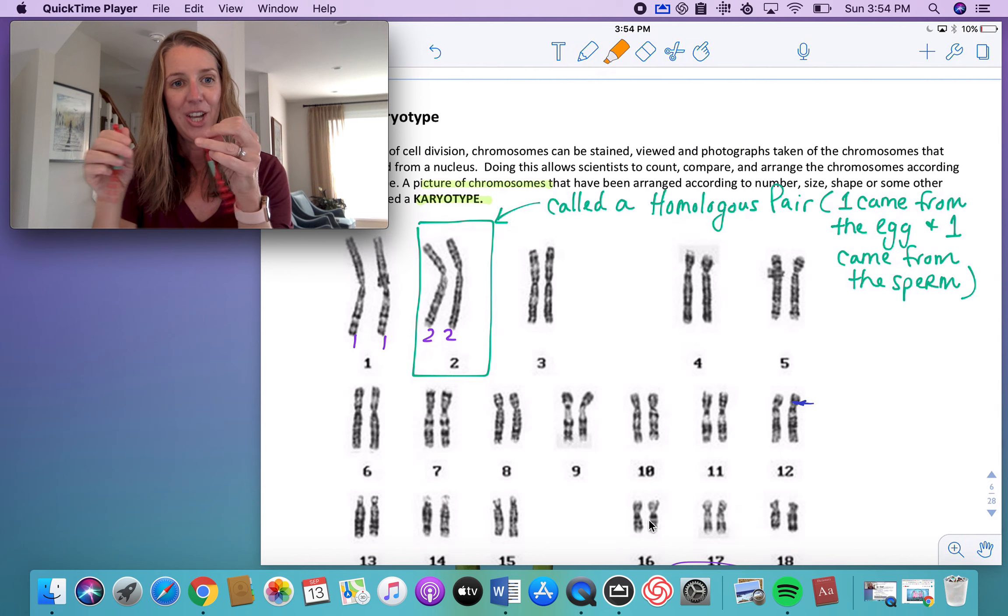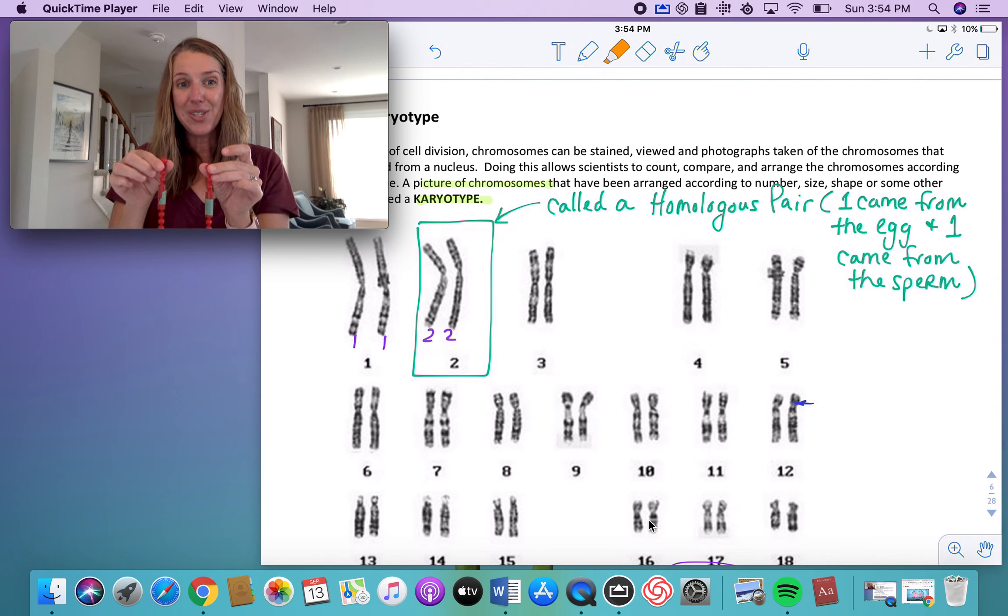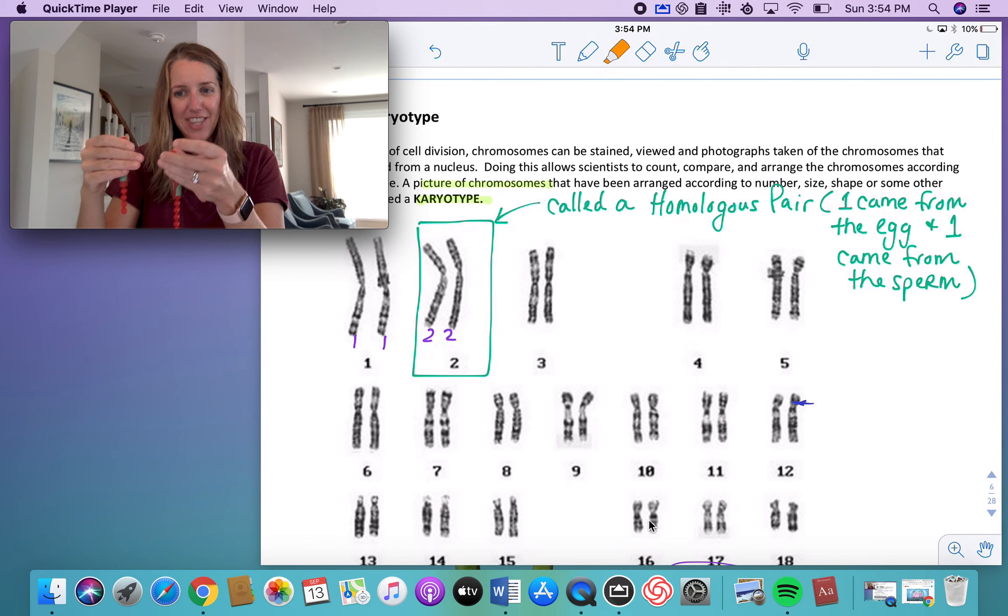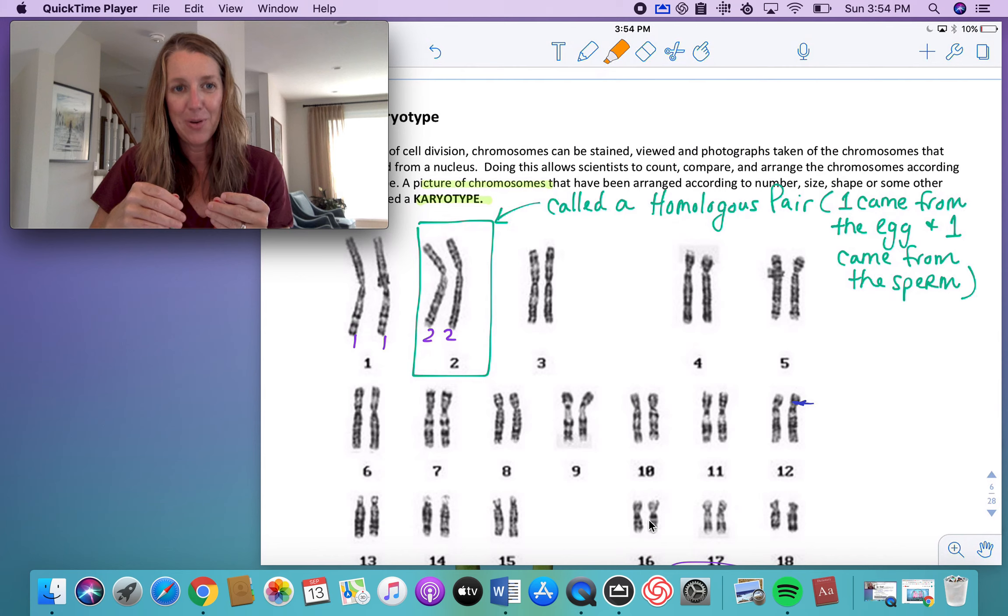But guess what? You have two chromosome number twos. One came from your mother, and one came from your father. Or one came from the egg that made you, and one came from the sperm that made you. So that's why how tall you're going to be is dependent upon the information from the egg and the information from the sperm. And then it works itself out to figure out what the height of this individual is going to be. Does that make sense?